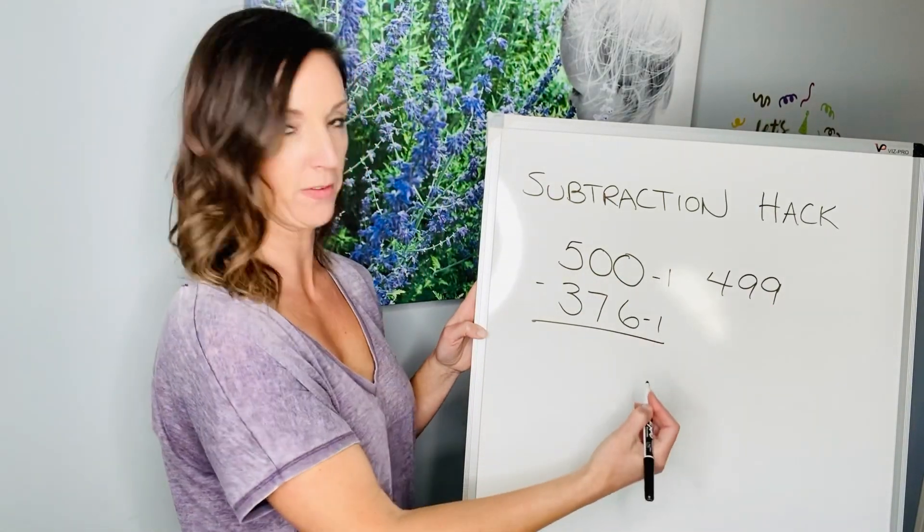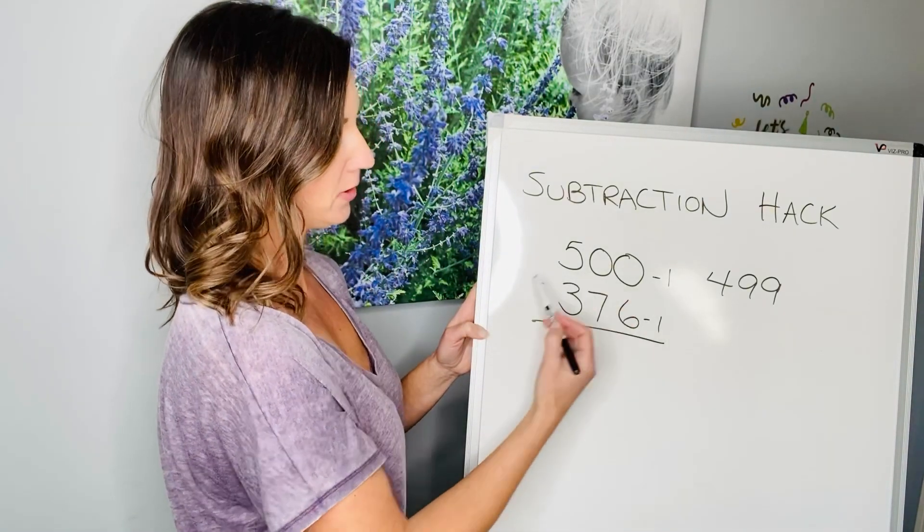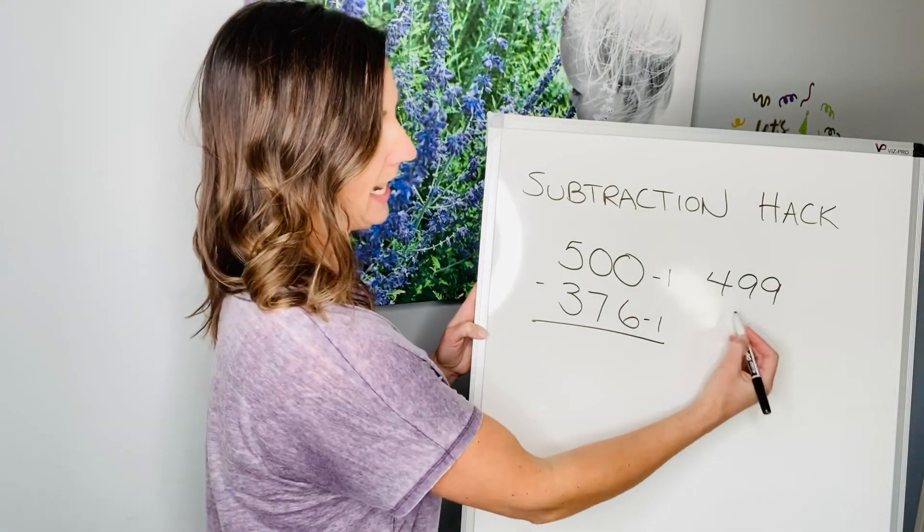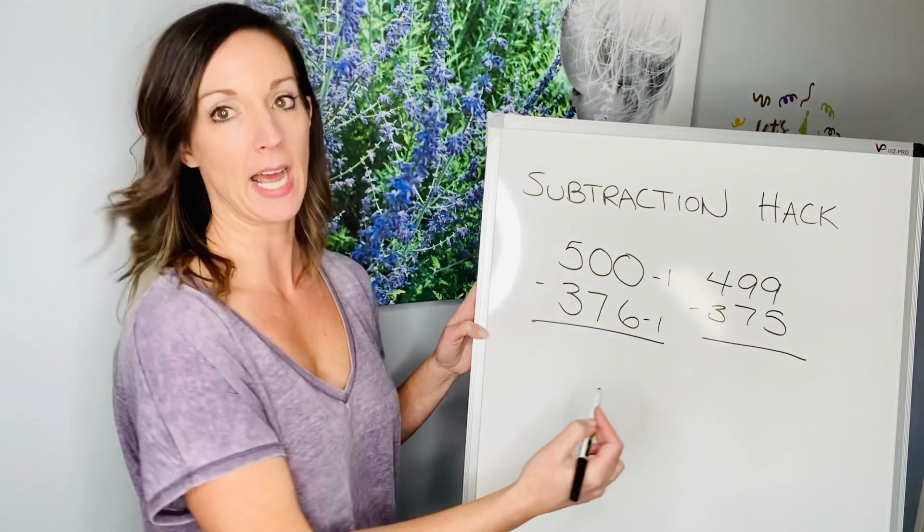I could also take $1 away from this, and I'm keeping the numbers the same distance apart. So, instead of 500 minus 376, I'm going to have $499 minus $375, because I took $1 away from the top and bottom.